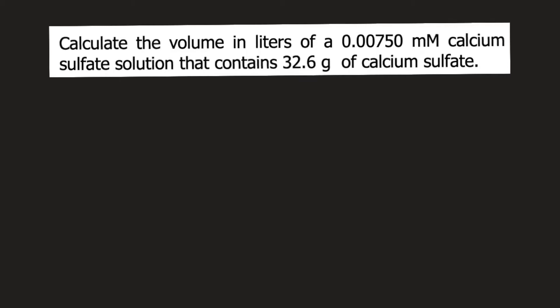Calculate the volume in liters of a 0.00750 millimolar calcium sulfate solution that contains 32.6 grams of calcium sulfate. Calcium sulfate is CaSO₄.